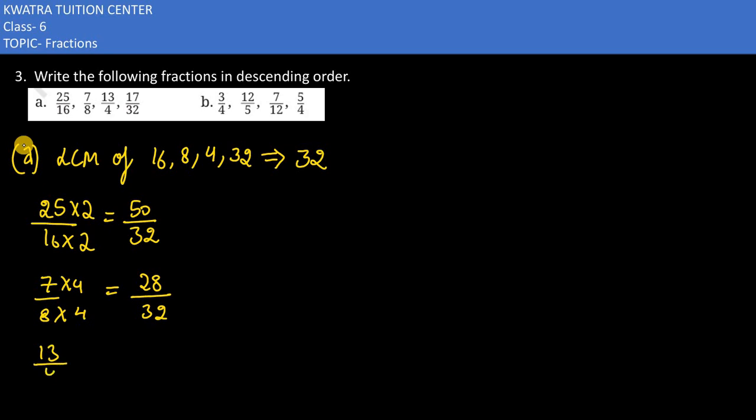Next we have is 13 by 4. 4 को हम क्या बनाएंगे? 32 बनाएंगे. So multiply it with 8. So we have 13 into 8. 13 into 8 is 104 divided by 32. Last number we have is 17 by 32. That will remain same. क्योंकि 32 को 32 बनाना क्या करना है? 1 से multiply. तो number तो वही रहेगा.